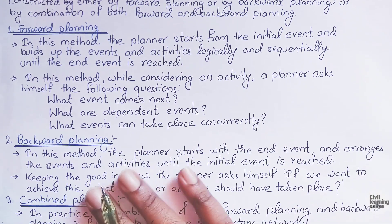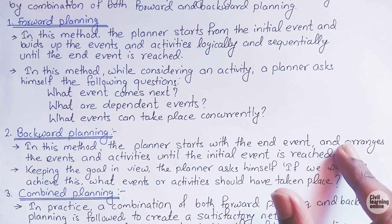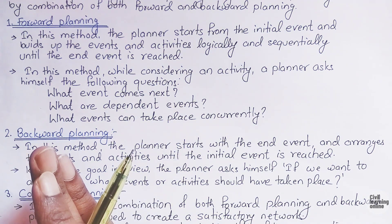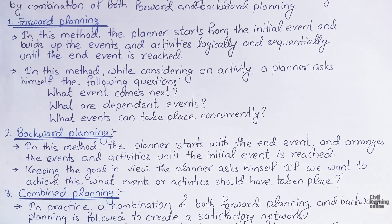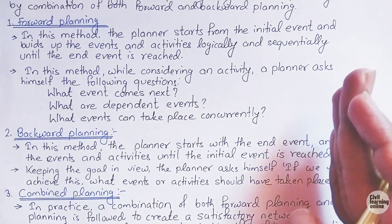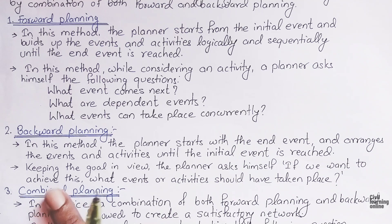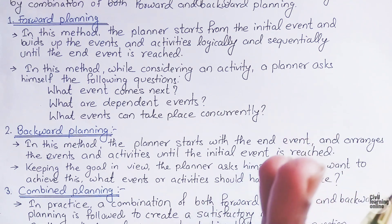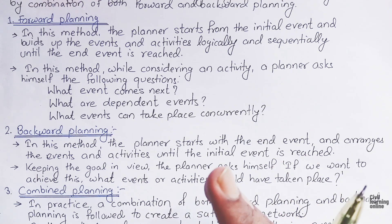The second type of planning is backward planning. In this method the planner starts with the end event and arranges events and activities until the initial event is reached — it is exactly opposite to forward planning. Keeping the goal in view, the planner asks: to achieve this goal, what events and activities should have taken place? For example, if we plan to build a house, we imagine what activities are needed and prepare a network accordingly.